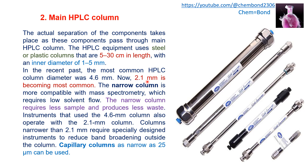Older instruments operated with 4.6 mm columns can also be operated with 2.1 mm columns. Columns narrower than 2.1 mm require specially designed instruments to reduce band broadening outside the column, while the 2.1 mm column fits into instruments designed for 4.6 mm. Capillary columns narrower than 2.1 mm — as narrow as 25 micrometers — can also be used.